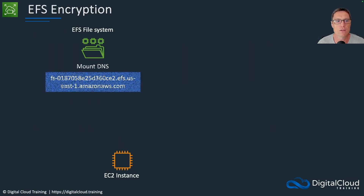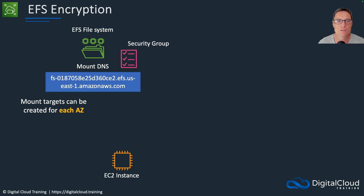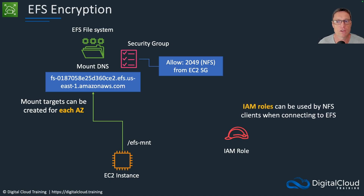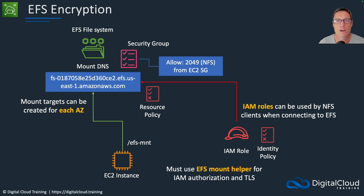Encryption in transit is enabled when mounting the file system. We have our file system with a mount DNS address. We can create mount targets in different availability zones, along with a security group. For the security group, we need to allow the NFS protocol on port 2049 from the security group of the instances connecting to the file system. We can then mount the file system. IAM roles can be used by NFS clients when connecting to EFS — we can have an identity-based policy or a resource-based policy on the file system itself. You must use the EFS mount helper for IAM authorization and for TLS.